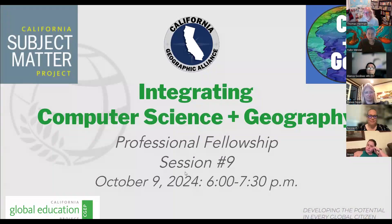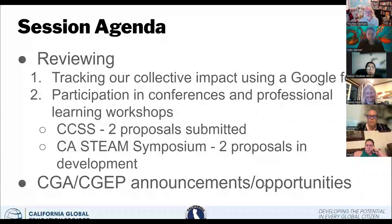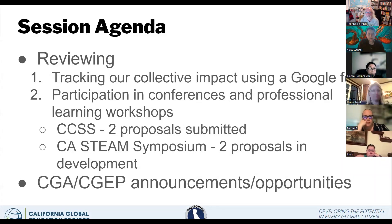We're going to have some sharing later, and we've convinced Blanca to be a volunteer and also Renee — Renee going first, Blanca second — but anybody else will also have time for sharing. I also wanted to follow up on our conference participation. We have the CCSS — California Council for the Social Studies — the proposal submission deadline has come and passed, and we did submit two proposals.